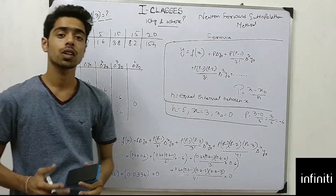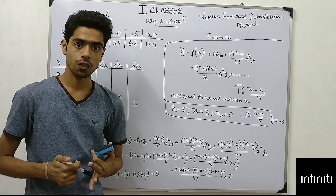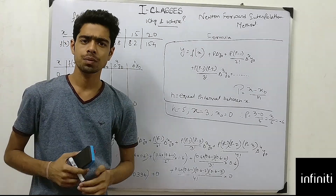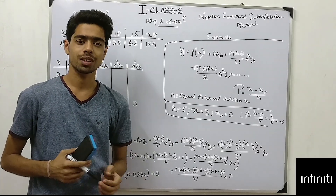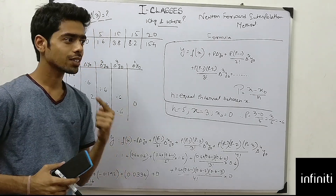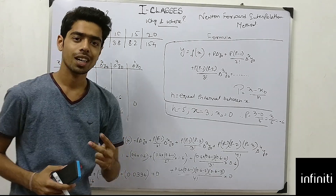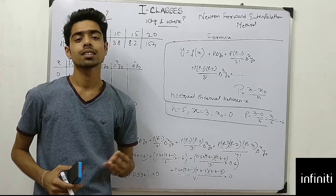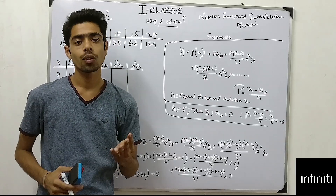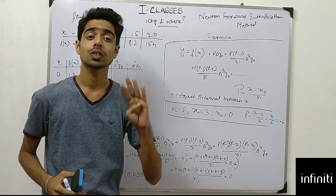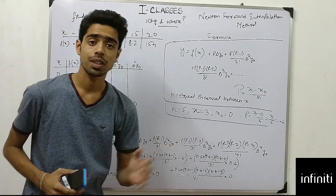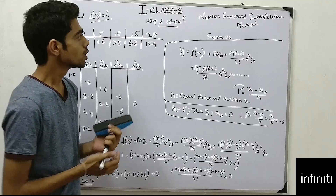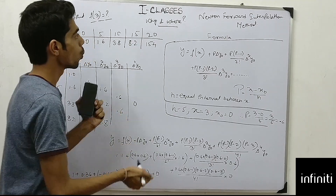My first question is: why and where will I use this Newton's Forward Interpolation method? There are basically four types of interpolation methods: one is Newton's Forward, another is Newton's Backward, third is Lagrange, and fourth is Newton's Dividing Difference interpolation method.